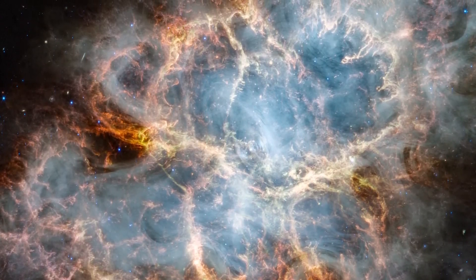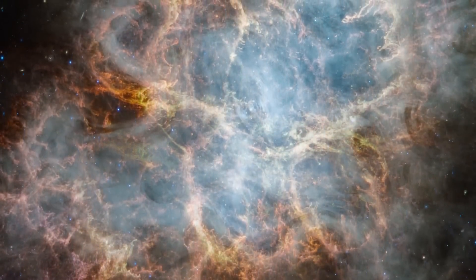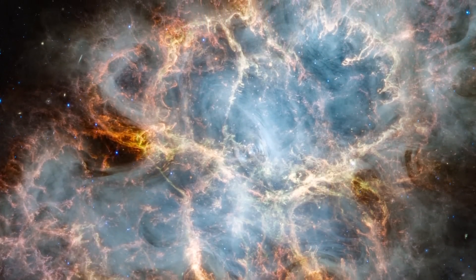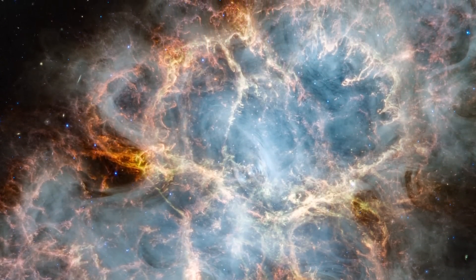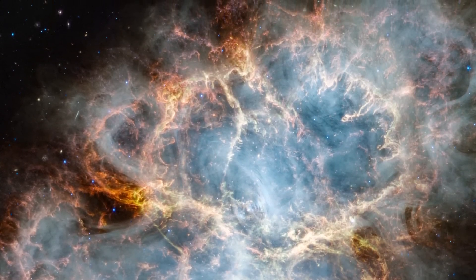The outer parts of the remnant show remains of the exploded star blown out into interstellar space. This bright, hot material was ejected at very high speeds and has fractured into intricate filaments and tendrils as it was pushed outward by the pulsar wind nebula.